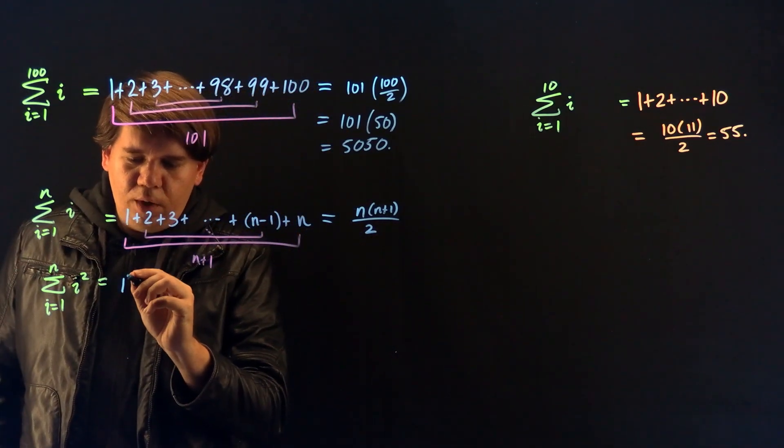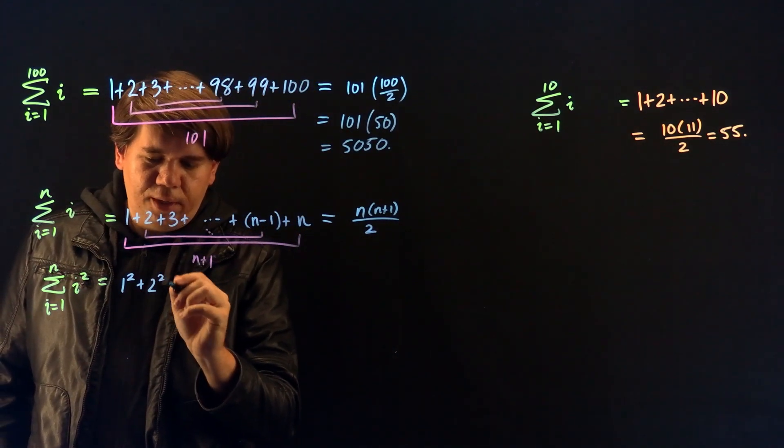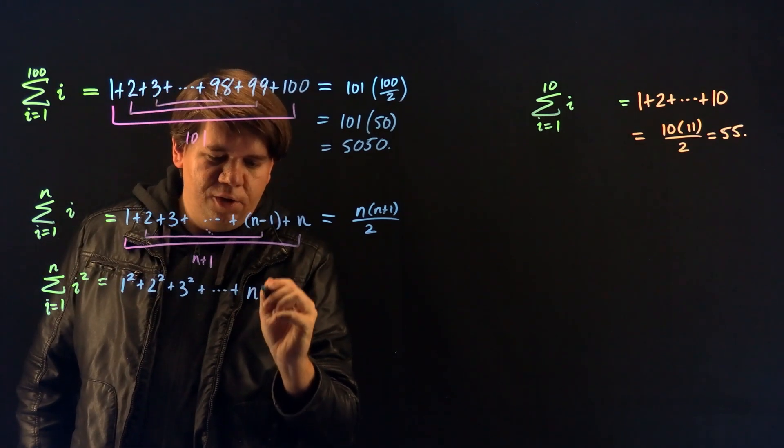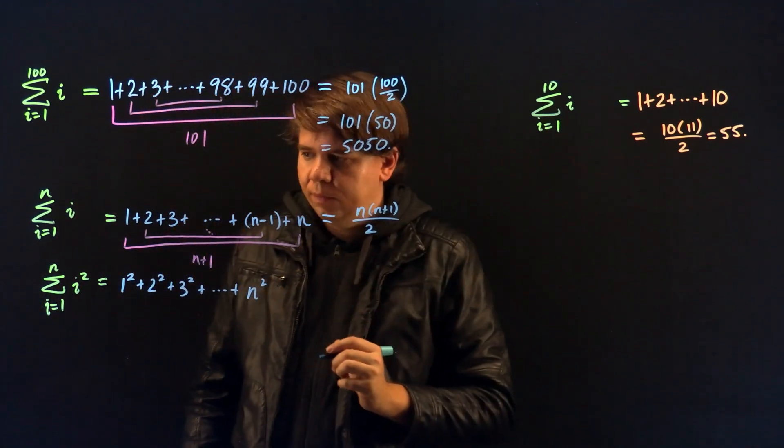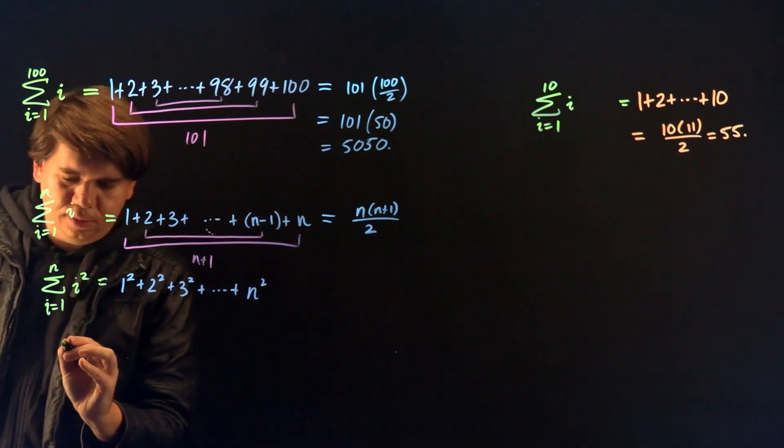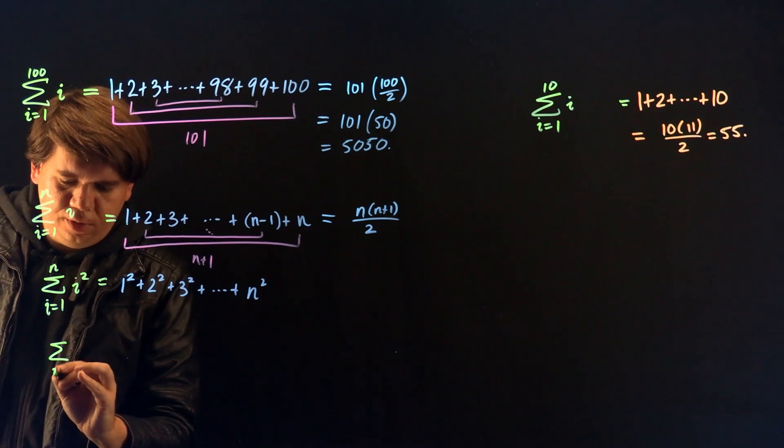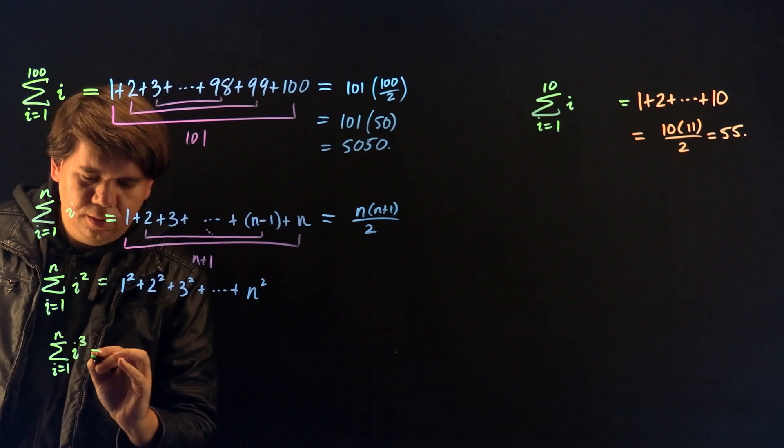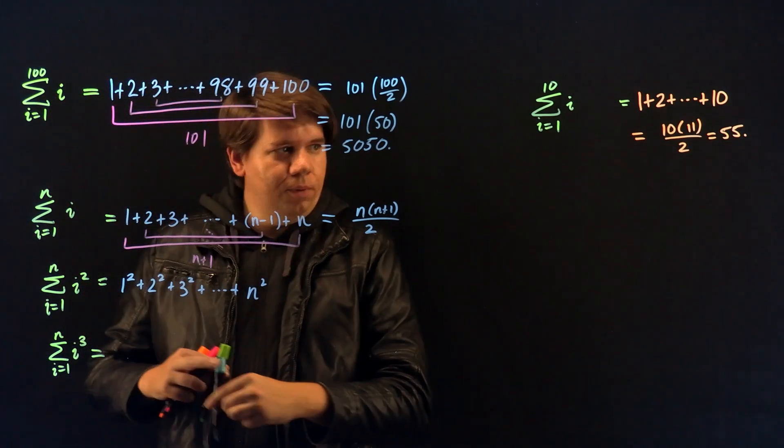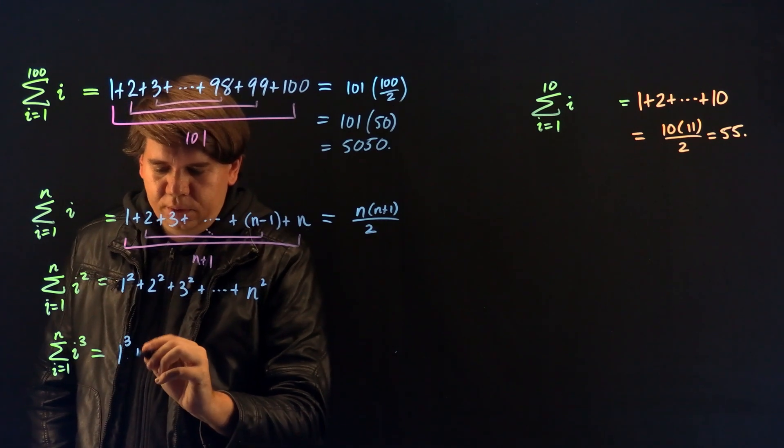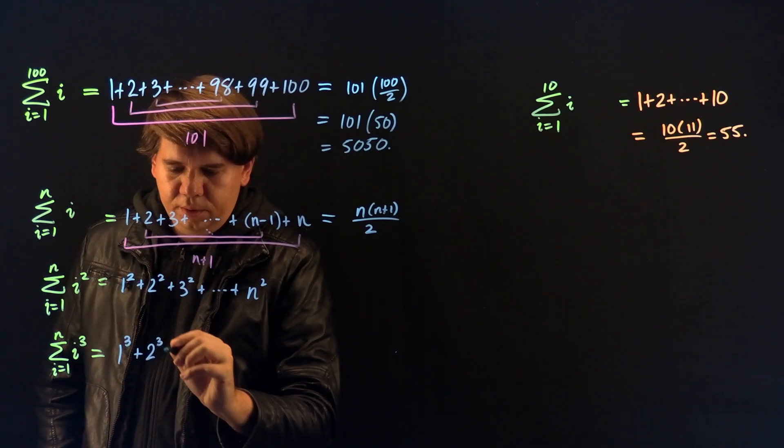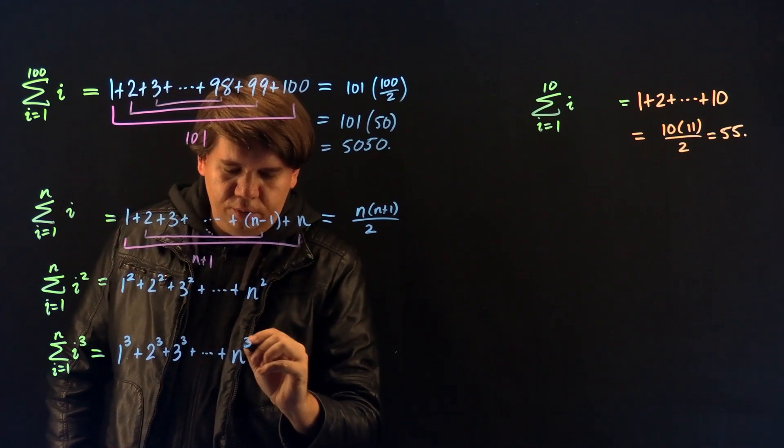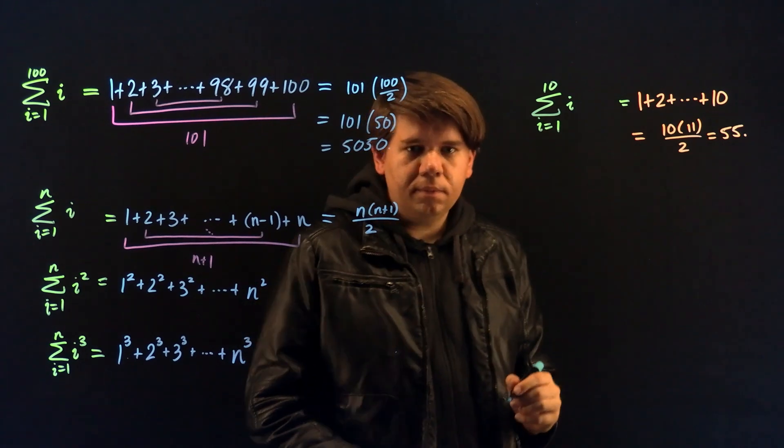So I'm going to add up 1 squared plus 2 squared plus 3 squared all the way up until n squared. Or if I wrote what is the sum from i equals 1 to n of i cubed, that would simply mean I want to sum 1 cubed plus 2 cubed plus 3 cubed all the way up to n cubed.